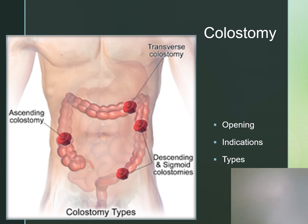Regular irrigations may be required to control sigmoid and descending colostomies, which could eliminate the need for a continuous appliance. The colostomy may be a single barrel, double barrel, or a loop.